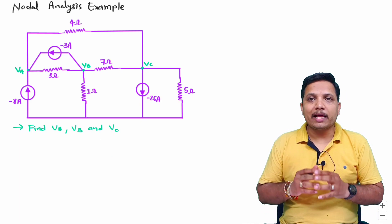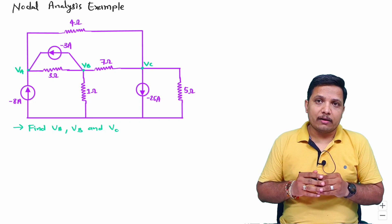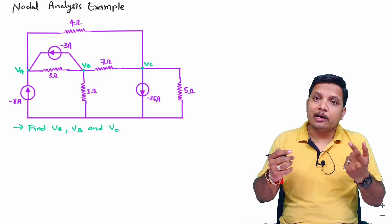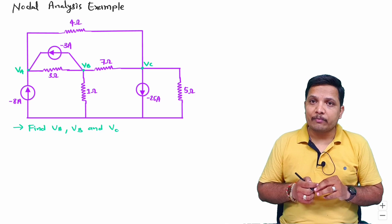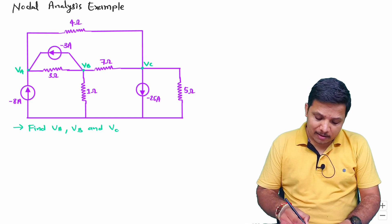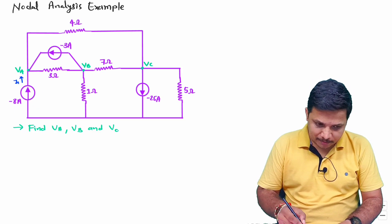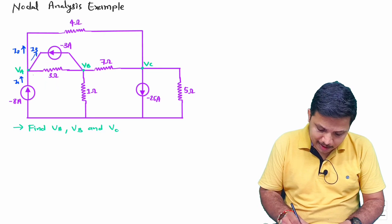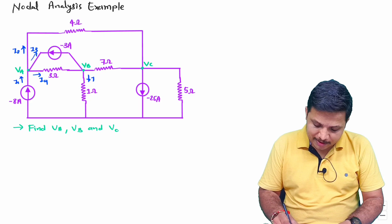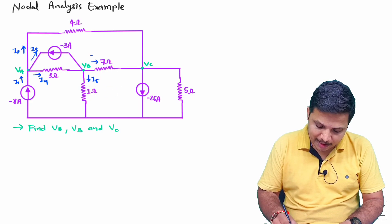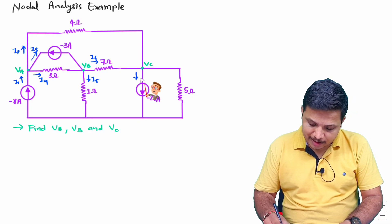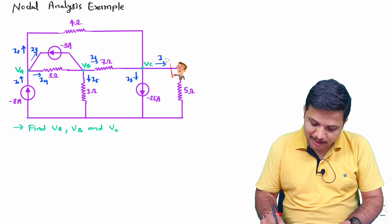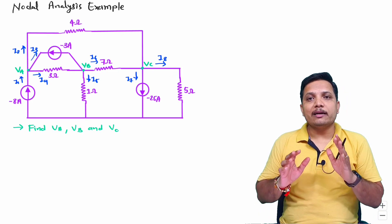Before we apply nodal analysis, we should be considering the value of current. To consider value of current, you don't have any restriction. But when you apply Kirchhoff's current law, as per the direction you should consider polarity. So here I am randomly considering currents: I1, I2, I3, I4, I5, I6, I7, and in the direction of I2, I also need to consider current I8. That is how we have considered the directions of currents.